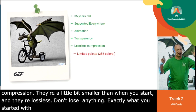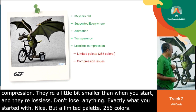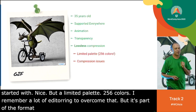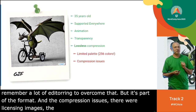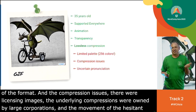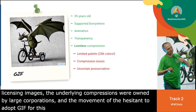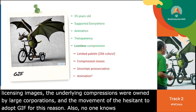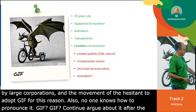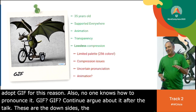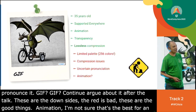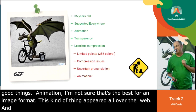I remember a lot of dithering to try to overcome that 256-color limitation. When GIF first came out, there were licensing issues — the underlying compression algorithms were owned by large corporations, and the free software movement was hesitant to adopt GIF for this reason. Also, no one knows how to pronounce it — is it GIF or GIF? And finally, animation: I'm really not sure that's the best thing for an image format. Probably you should just be using a video format for that kind of thing.